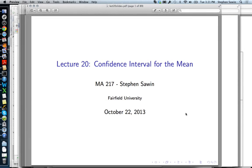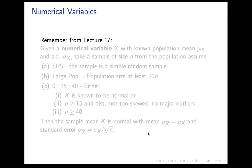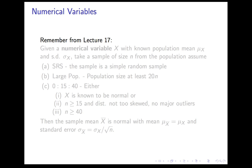Lecture 20 on Confidence Intervals for the Mean. This lecture follows in close analogy to Lecture 19, Confidence Intervals for a Proportion, where we use the sample proportion to estimate the population proportion. Here, we're going to use the sample mean and some other information to estimate the population mean. To do that, we'll have to remember Lecture 17, when we described the distribution of the sampling mean.